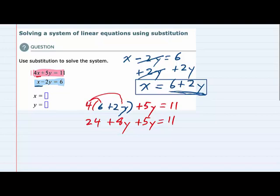We have some common terms here that we can combine, the 8y plus the 5y, bringing down the 24, gives us 24 plus 8y plus 5y is 13y equals 11.